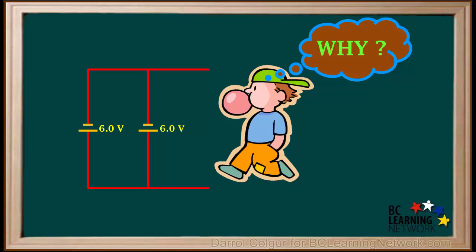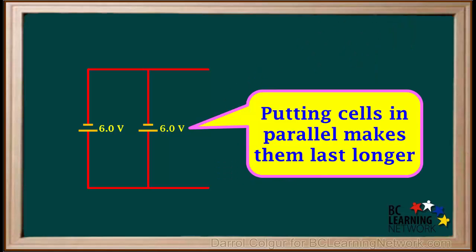You may be wondering why one would put more than one cell in parallel when the voltage stays exactly the same. The simple reason is that putting cells in parallel will make them last longer than having an individual cell. The more cells there are in parallel, the longer they will last given a certain load.